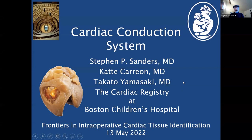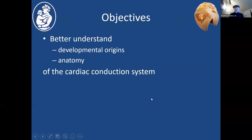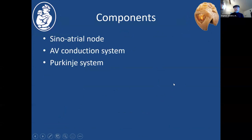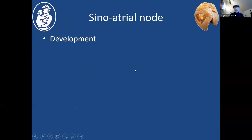We want to talk about the cardiac conduction system — the origins and anatomy. The components we're going to discuss are the sinoatrial node, the AV conduction system, which includes not only the AV node but also the penetrating bundle and bundle branches, and then the peripheral system, the Purkinje fibers.